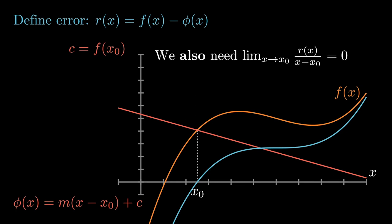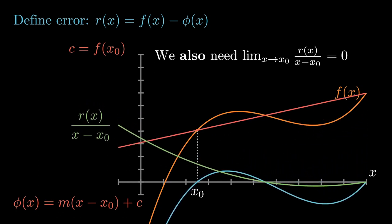But that's not enough to make a good affine approximation. We also want the ratio between our error and our distance from x0 to go to zero. Here I'm illustrating that ratio as a green curve. Now let's imagine that we vary m.